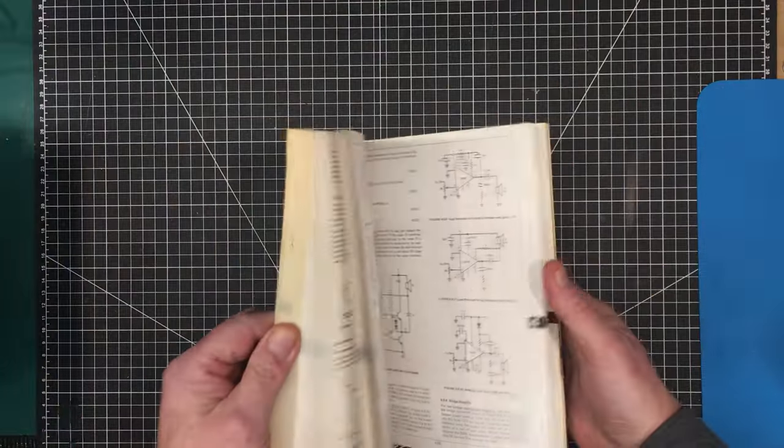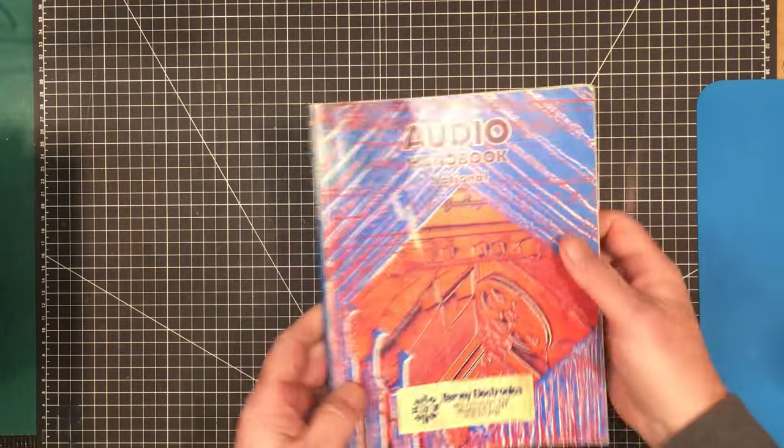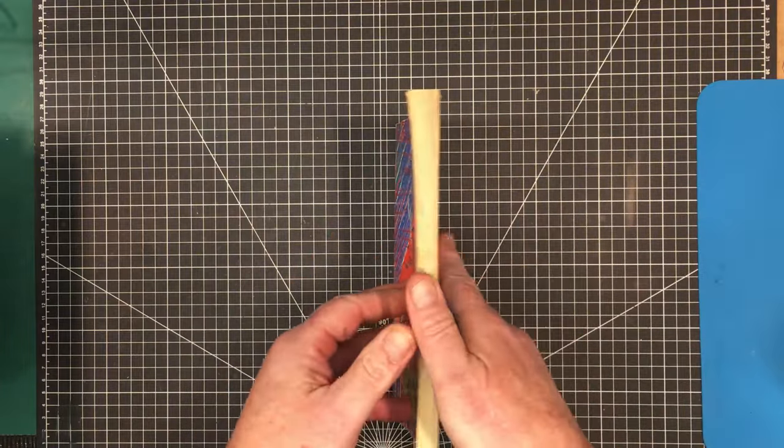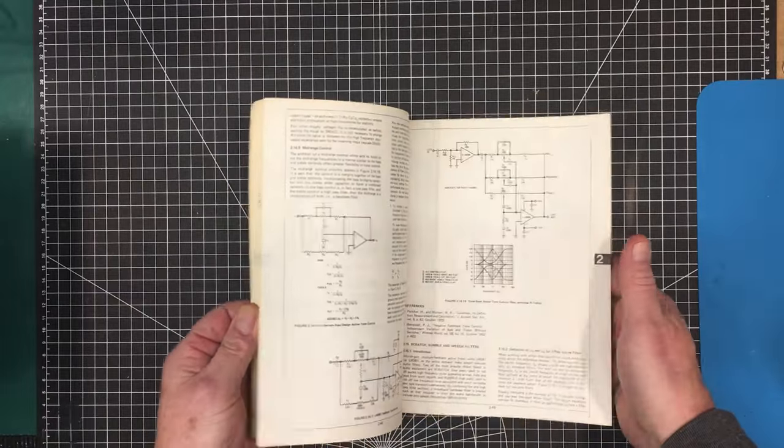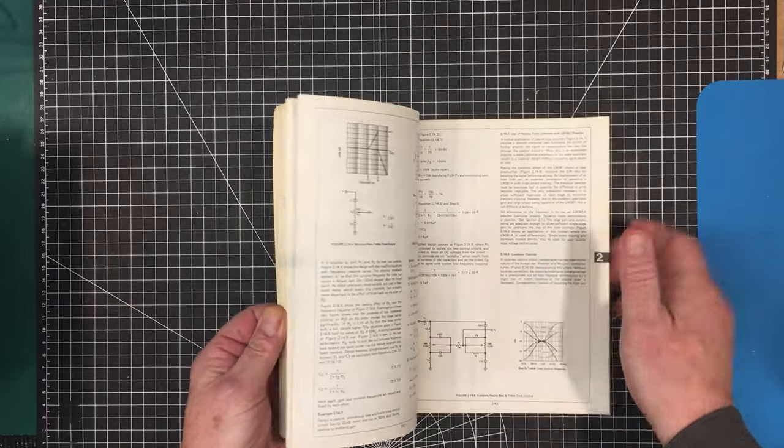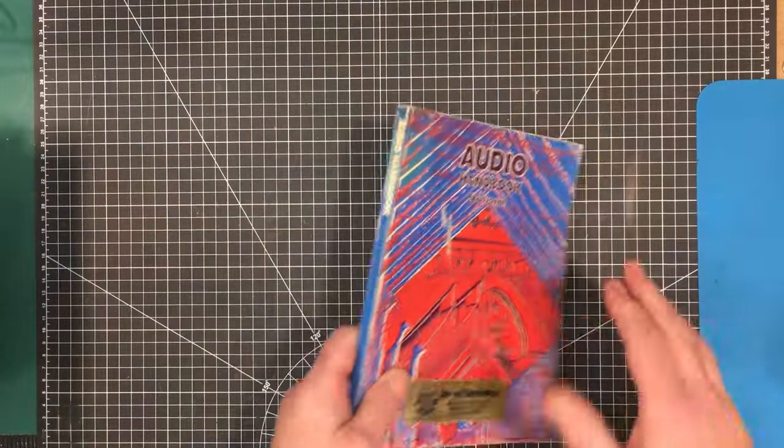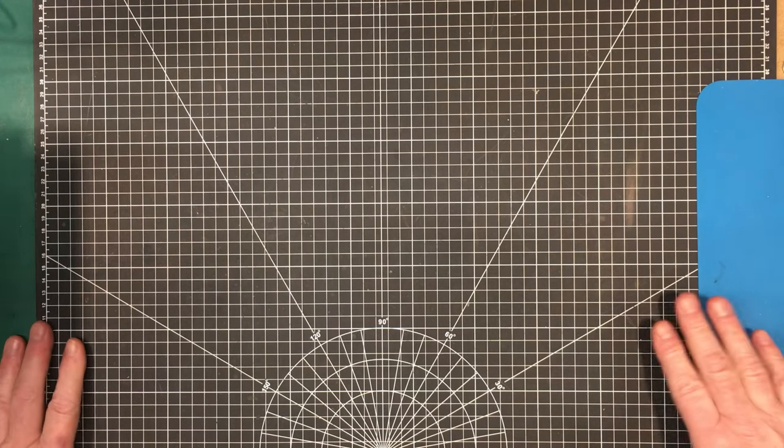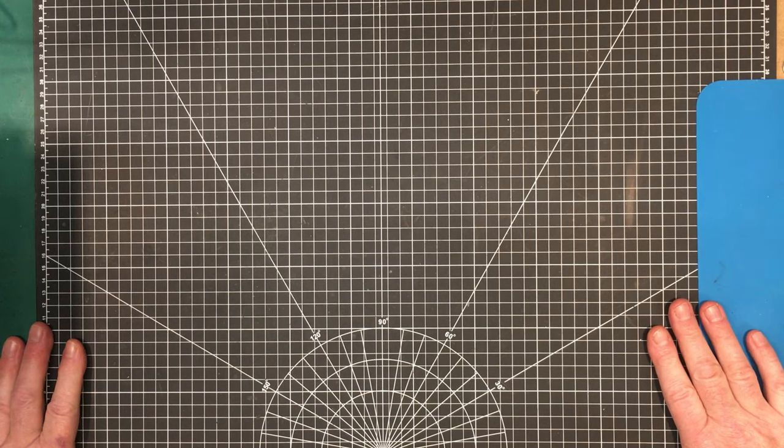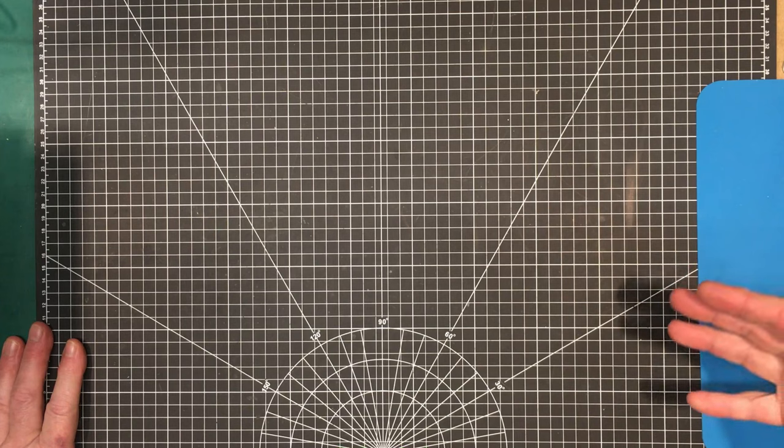Another source I have is handbooks that were produced by the manufacturers, this one by National. I have tons of them. They go through the ICs and a bunch of circuits, applications and stuff like that. These are invaluable. Again, I don't see them being produced anymore. You have to go to the manufacturers' websites and search for documentation, application notes and stuff like that. But again, that's fairly advanced stuff.